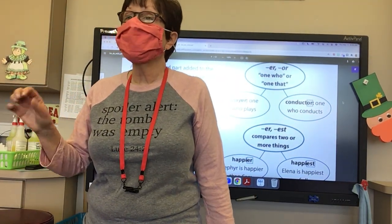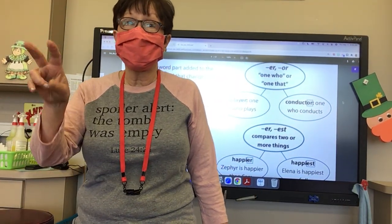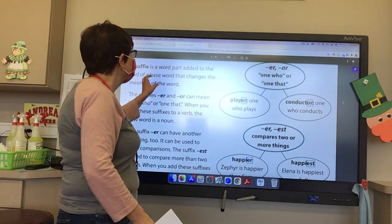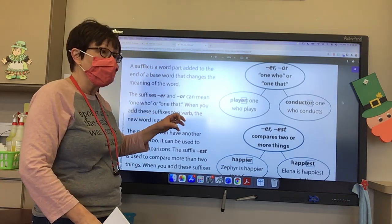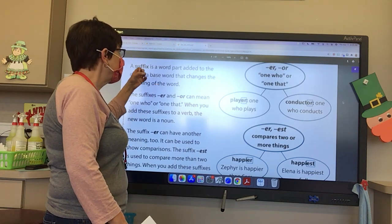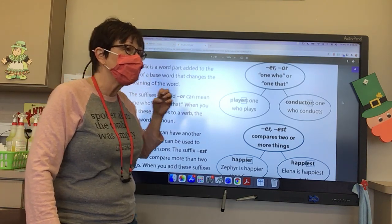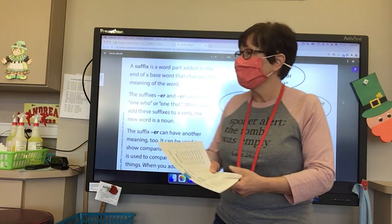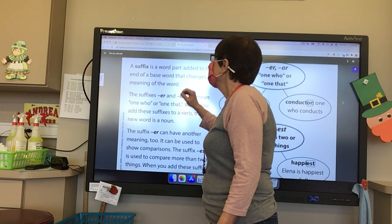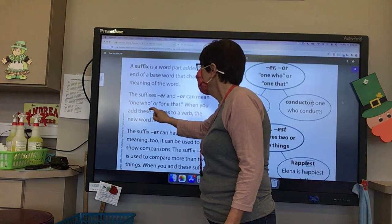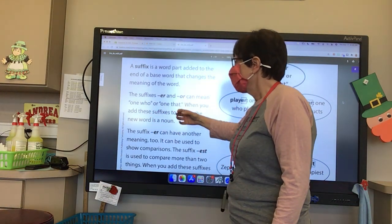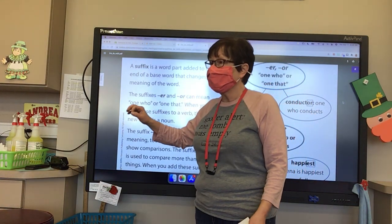Okay, boys and girls, we're going to be talking about our suffixes — two suffixes. We're going to review them. We are going to talk about -er and -or. Now let's remember: a suffix is a word part that we add to the end of a base word that changes the meaning of that base word. So when we add -er and -or, it means 'one who' or 'one that does something.' So when we add these suffixes to a verb, the new word is a noun.